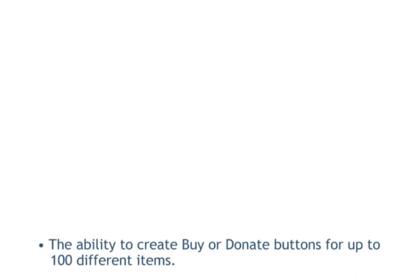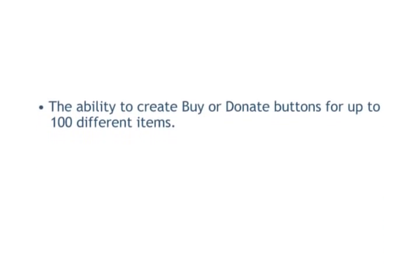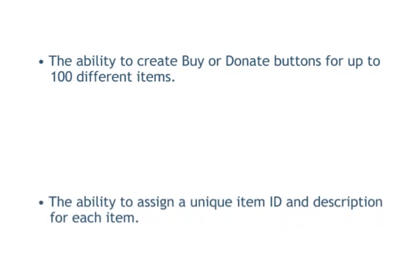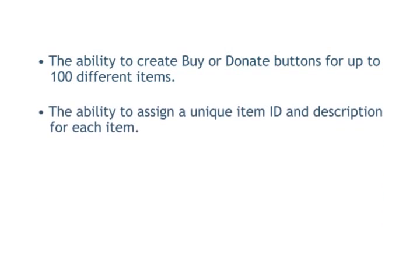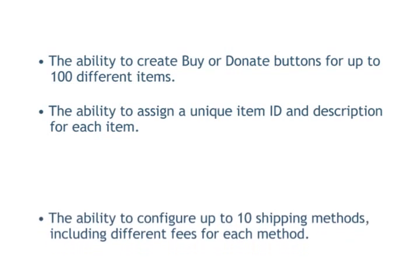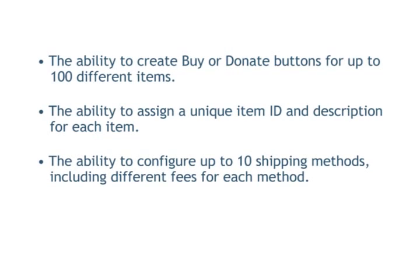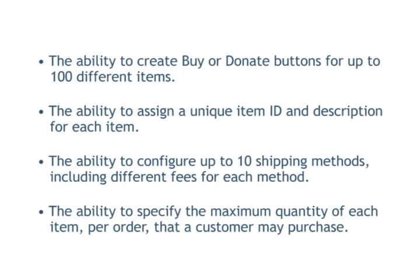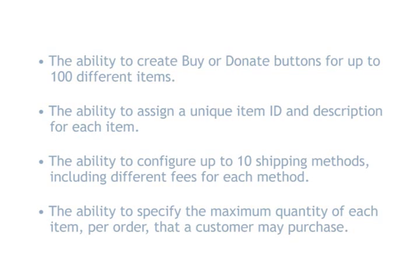Simple Checkout has numerous features that can be customized to fit your individual business needs, including the ability to create buy or donate buttons for up to 100 different items, the ability to assign a unique item ID and description for each item, the ability to configure up to 10 shipping methods including different fees for each method, and the ability to specify the maximum quantity of each item per order. In addition, nonprofit organizations can specify suggested donation amounts or accept donations of any amount as entered on the payment form.